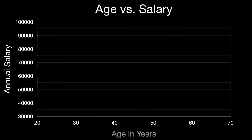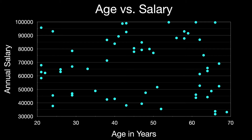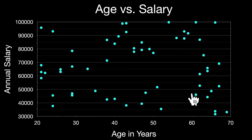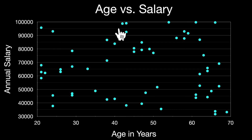Let's look at another scatter plot example: age versus salary. Age is a variable and salary is a variable, and we can literally see that these points are scattered all over the place. This is an indicator of no relationship — you can have both young and old people with very high salaries versus lower salaries. There is no relationship in this scatter plot.